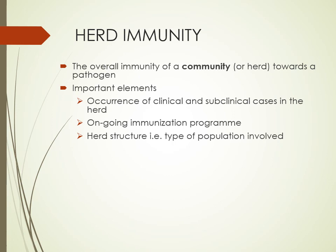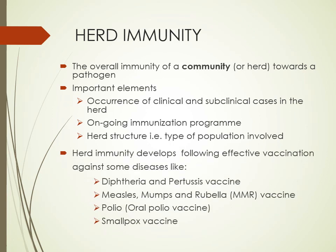The important elements of herd immunity are: the occurrence of clinical and subclinical cases in the population, ongoing immunization programs, and the type of population involved. Effective vaccination has played an important role in herd immunity. The most important example is polio eradication — the OPV vaccine, which is capable of giving herd immunity, was used to replace the wild poliovirus, and this vaccine virus has replaced the wild poliovirus, playing an immense role in eradicating polio in our country.